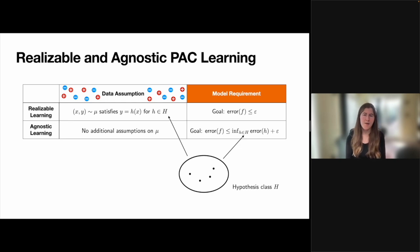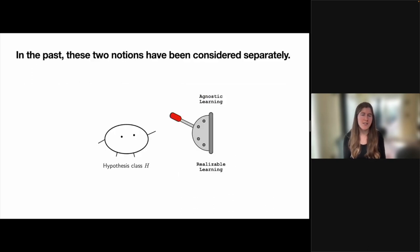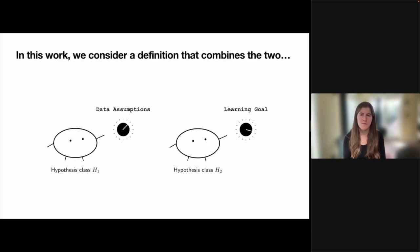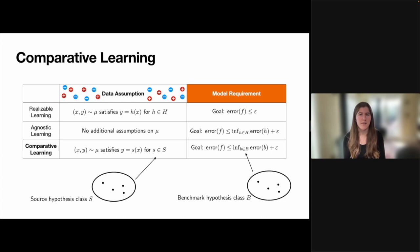A key commonality here is that both of these learning settings are defined by this constrained hypothesis class H. However, this class is playing a very different role in each setting. While this additional hypothesis class is a standard feature of these learning settings, we end up having to make a choice about whether we should use this class for introducing assumptions about the data or to relax the learning goal. In our work, we consider settings where we want to make both of these modifications. This is the setting that we end up calling comparative learning.